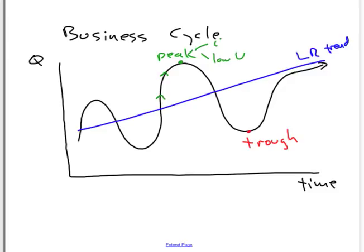A period of contraction of the economy, when Q is shrinking, is called a recession. The trough is the bottom of a recession, and at the bottom of a recession you won't have much inflation, but you'll have high unemployment, particularly cyclical unemployment.